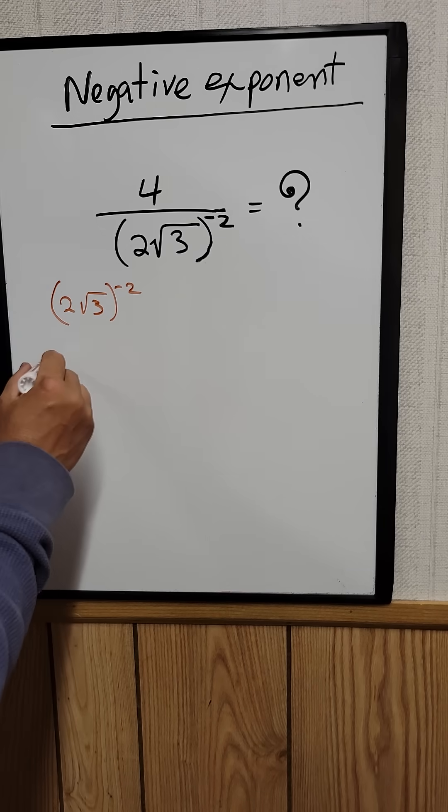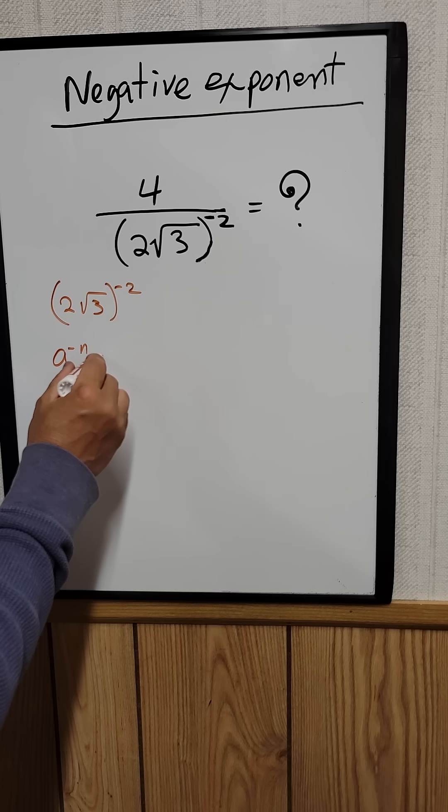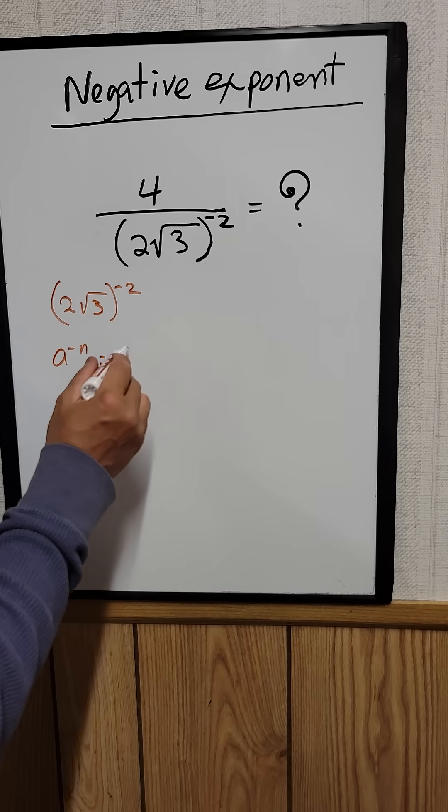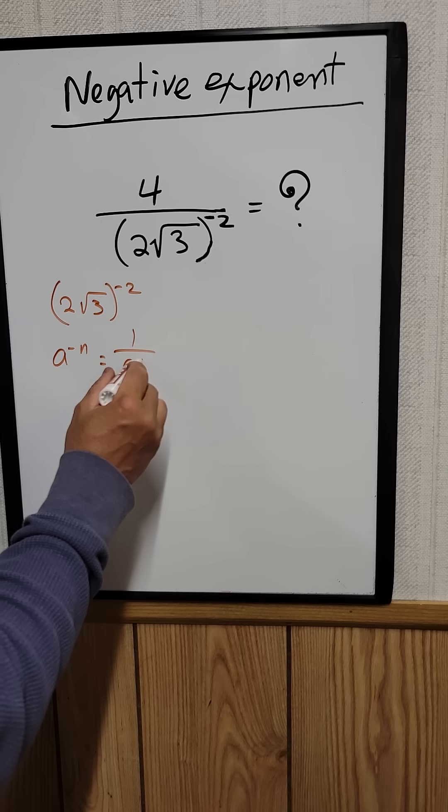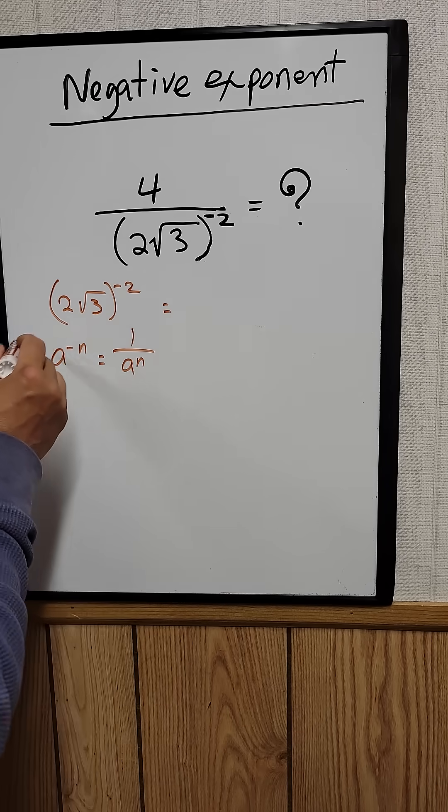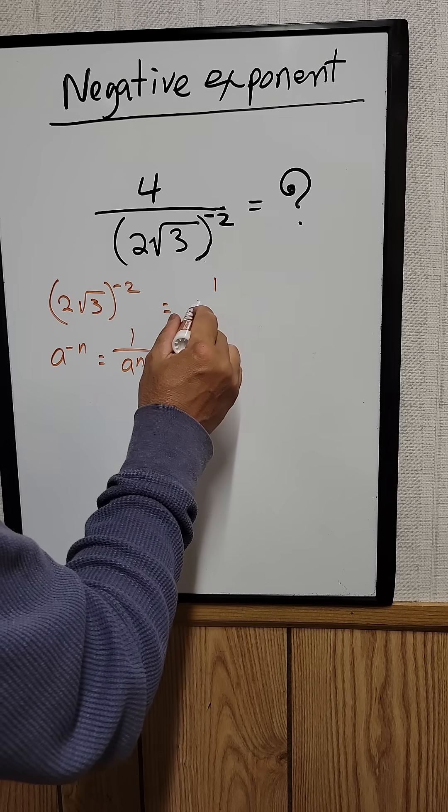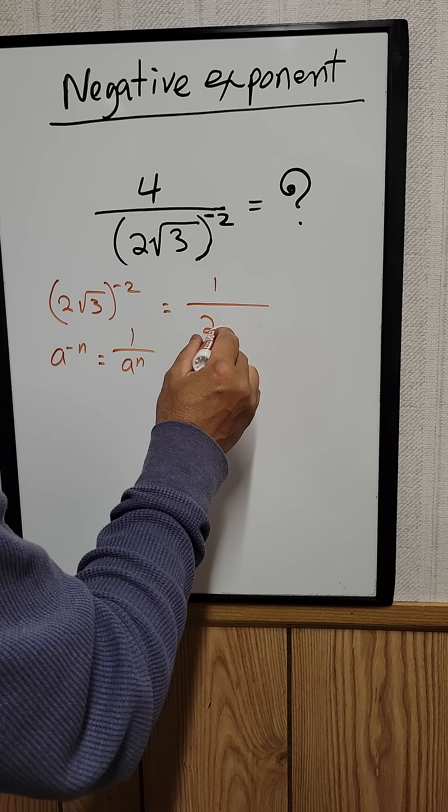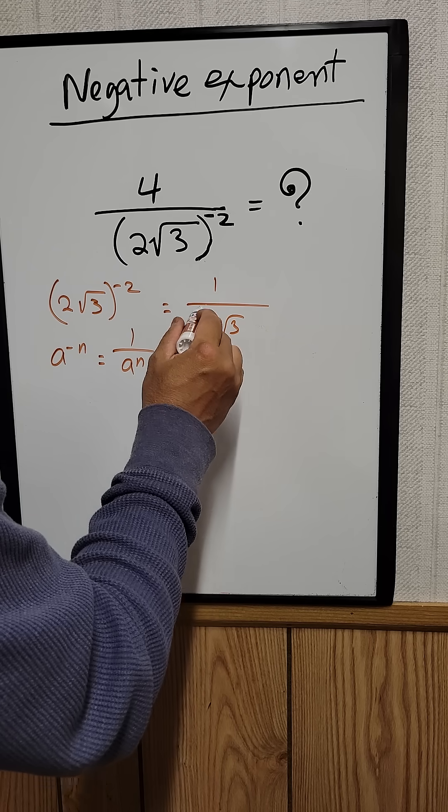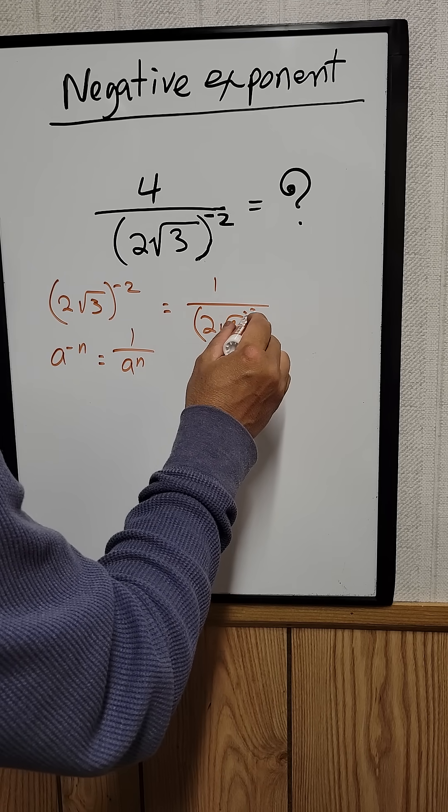There's an exponent law that states if a is raised to the negative n power, we can rewrite that as 1 over a raised to the n power. So applying that rule, we can say 1 over 2 times the square root of 3 raised to the second power.